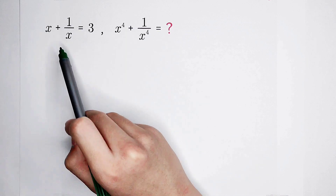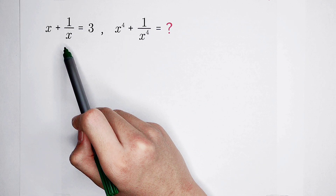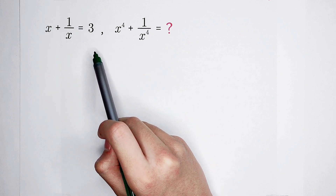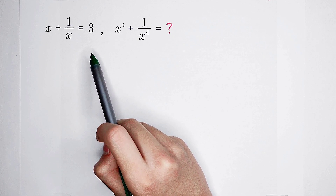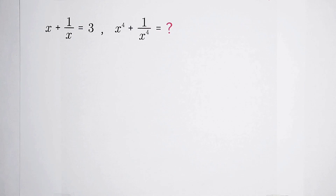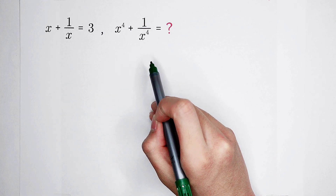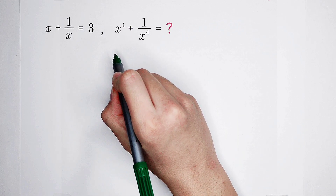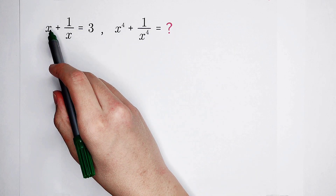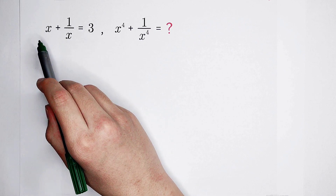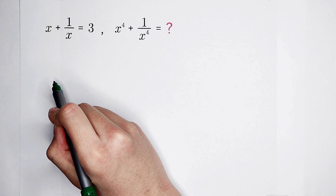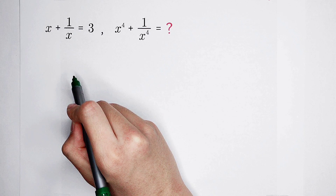Because 1 over x is just x to the power of negative 1. How can we reach our goal? One of the best methods is to raise both sides to the power of 4. But maybe you have a problem if you don't know the formula for (a plus b) all to the power of 4. I'm going to show you another fantastic method for this kind of question. We can first solve the value of x squared plus 1 over x squared, and then solve the value for this.